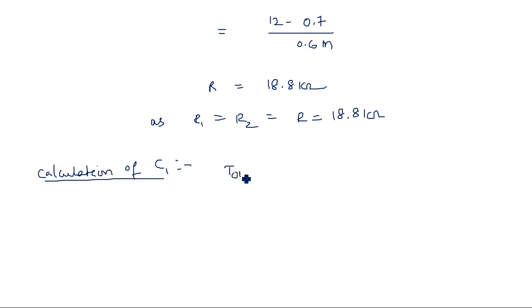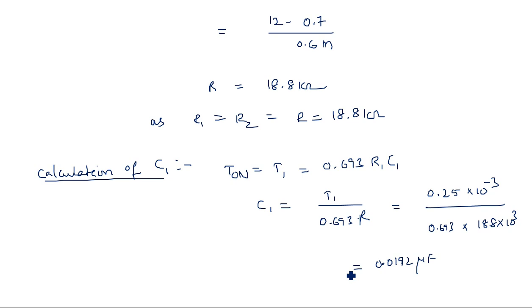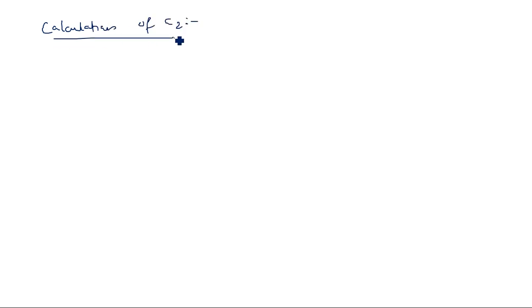Since the capacitors are different, T1 = 0.693 × R1 × C1, so C1 = T1 / (0.693 × R) = (0.25 × 10⁻³) / (0.693 × 18.8 × 10³) = 0.0192 microfarads. Note: if it is a symmetrical waveform with no specified duty cycle, you only need one capacitor value. Separate C1 and C2 are only needed when a duty cycle other than 50% is specified.